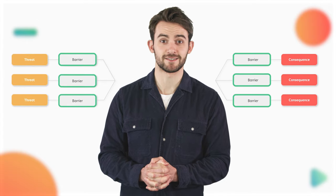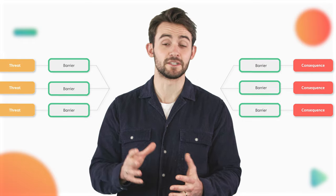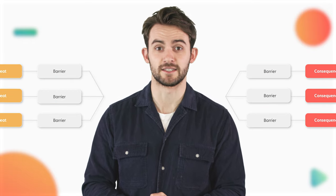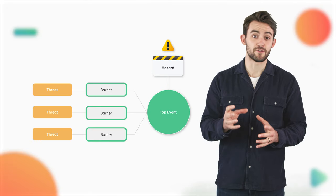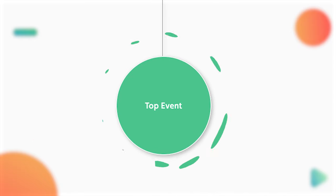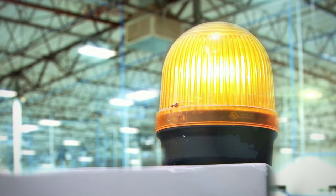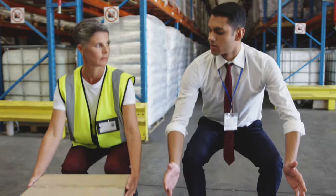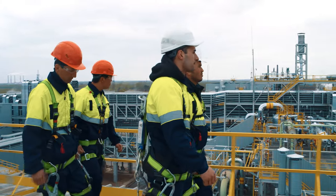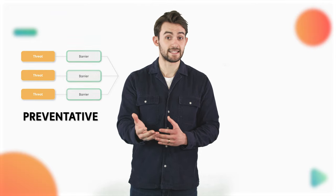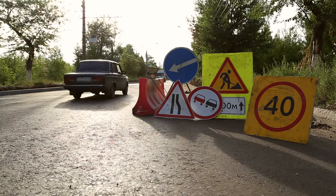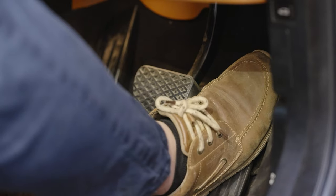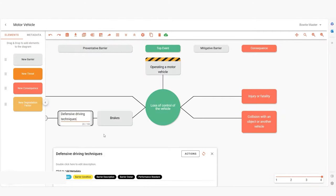Now let's move on to barriers. Different types of barriers play different roles in the bowtie diagram. Number five: preventative barriers. Preventative barriers sit between the threat and top event on the left-hand side, and are the measures put in place to prevent the top event from occurring. These can include safety features, protocols, and training programs designed to maintain control over the hazard. If preventative barriers work as intended, mitigative barriers may not even be needed, and all consequences can be avoided. In road safety, a preventative barrier could be something like brakes or defensive driving techniques.